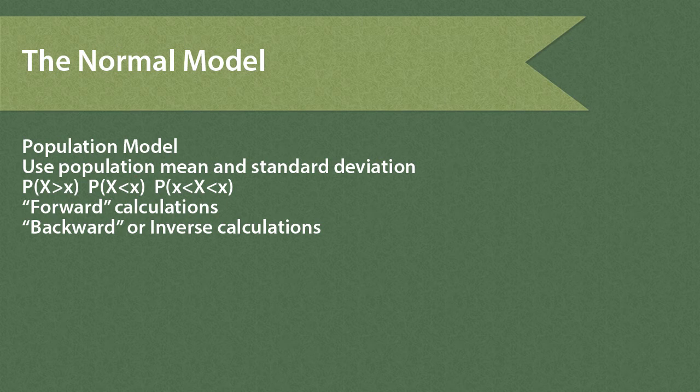Using our normal model we're going to set up a model of what we think the population distribution is like. To use a normal model we need the assumption of a normal distribution in the population, the population mean mu, and the population standard deviation sigma. With those three things we can calculate the probability of getting a value above some x value, less than some x value, or between two values we specify.